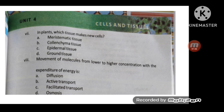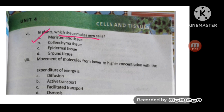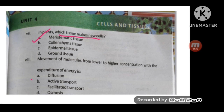Which tissue makes new cells? The answer is meristematic tissues. Movement of molecules from low to high concentration with expenditure of energy is called active transport.